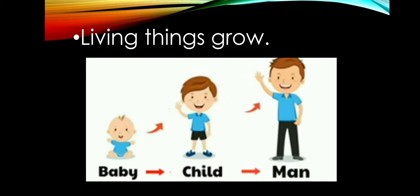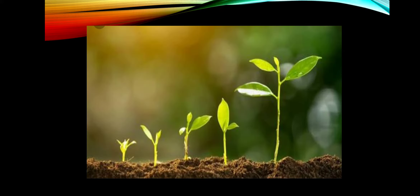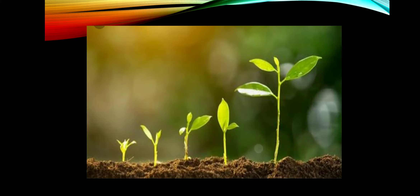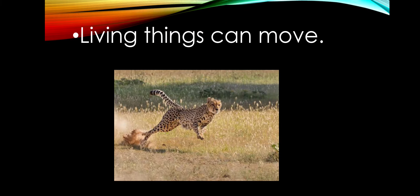Living things grow. Aapne dekha hoga ki humans hoon ya plants hoon, they grow. For example, in humans, first there is a baby, then they grow into a child and then into adults, right? And similarly, plants also grow. In this way, animals and birds — all living things grow.